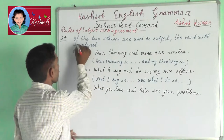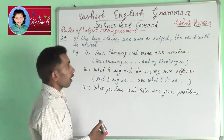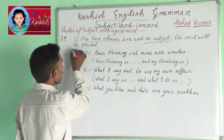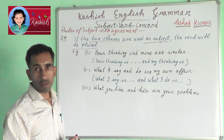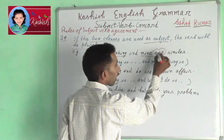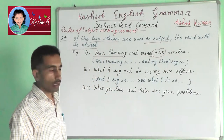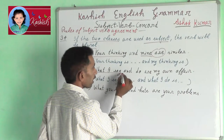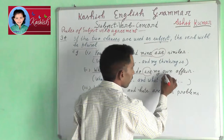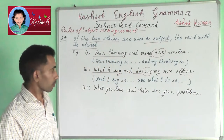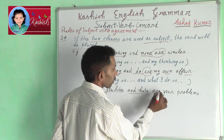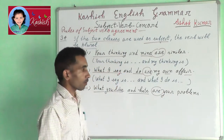Rule 34: If two clauses are used as the subject, the verb will be plural. For example: your thinking and mine are similar. What I say and do are my own affairs. What you like and hate are your problems.